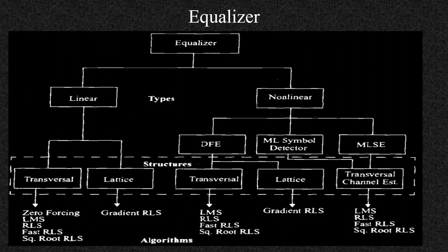Now we will talk about the categorization of equalizers. If you broadly categorize equalizers, they are divided into two types: one is the linear equalizer and other one is the non-linear equalizer. In the non-linear equalizer, you have different subtypes: DFE, then ML symbol detector, and MLSE. DFE is the decision feedback equalizer, maximum likelihood symbol detector, and maximum likelihood symbol estimator. For linear equalizers, the subtypes based on structure are transversal and lattice. In DFE, you also have transversal and lattice structures.